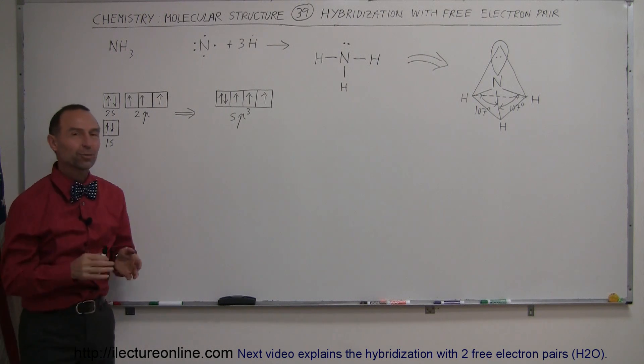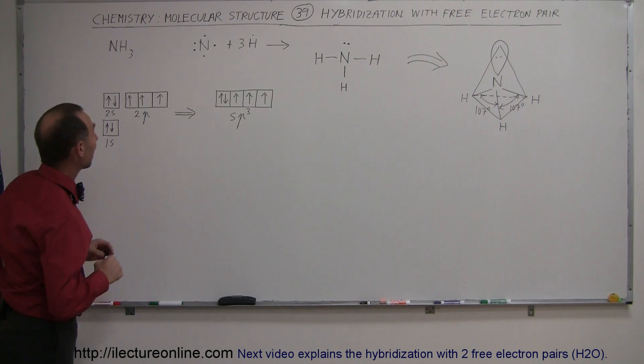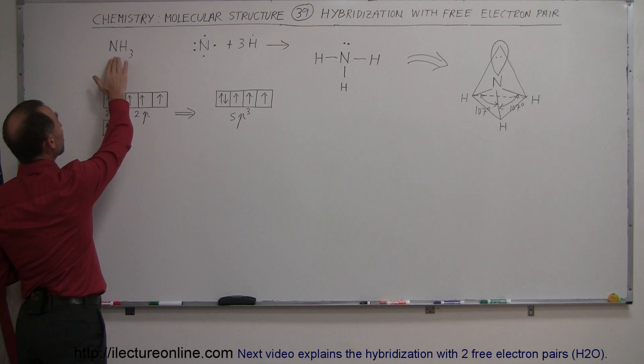And this time we're going to take a look at hybridization with free electron pairs. Now, we're going to start out with ammonia, NH3.